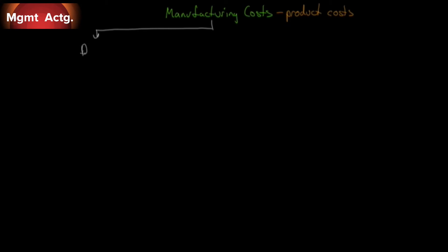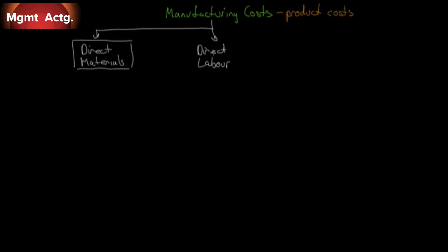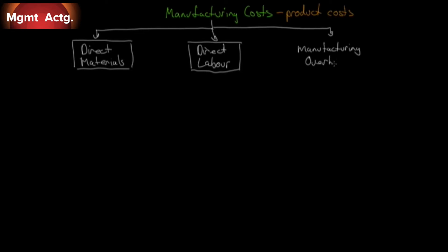We have three categories of manufacturing costs. We have direct materials, direct labor — you need labor to take those materials and convert them — and finally, manufacturing overhead, because production has to be done somewhere. These are our three broad product costs or manufacturing costs.